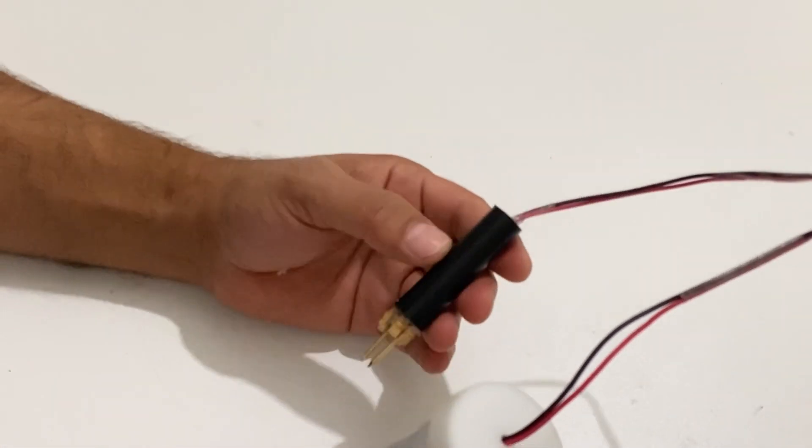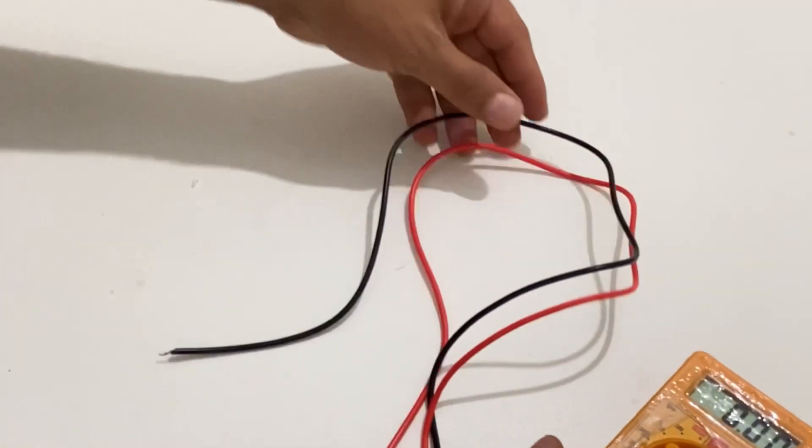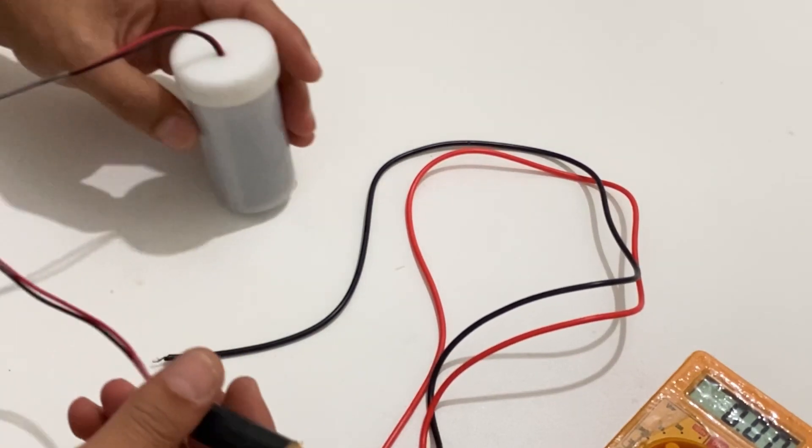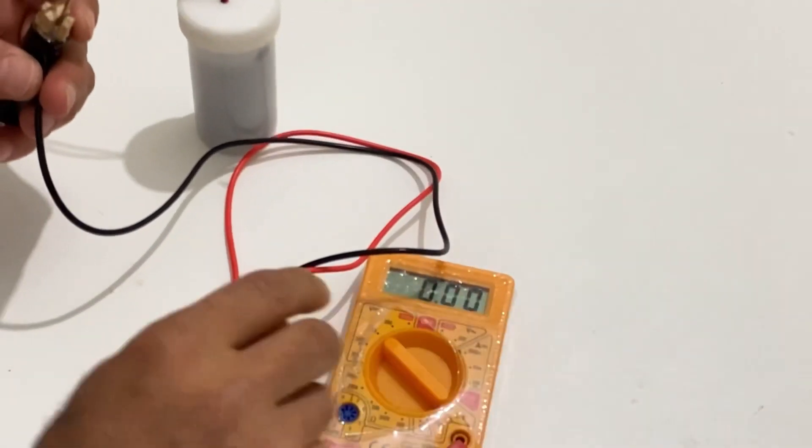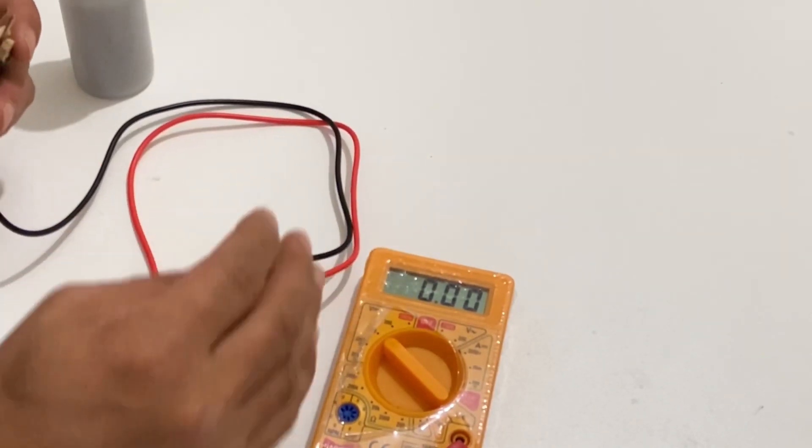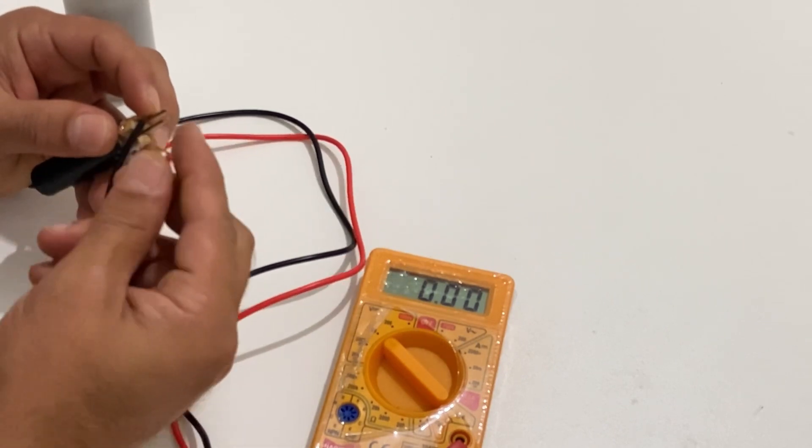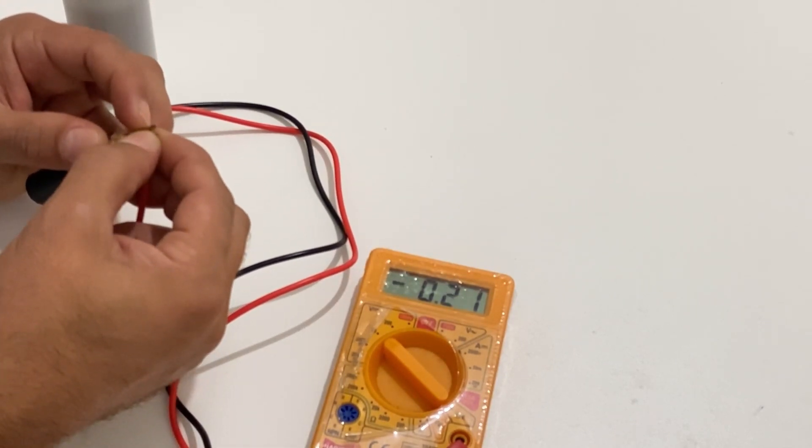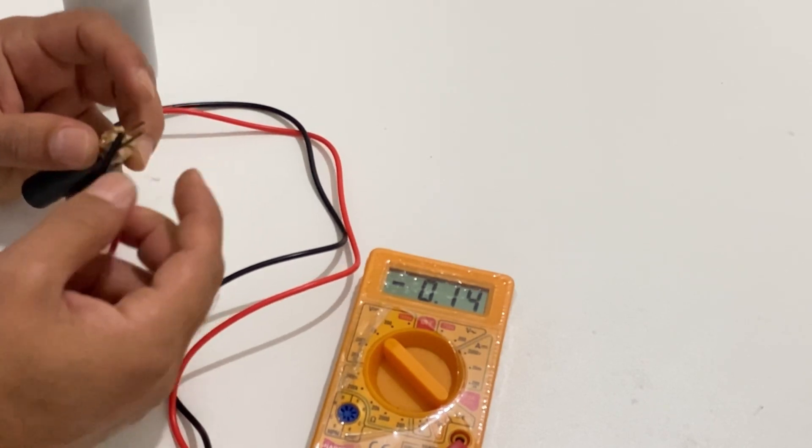Okay, I think we're done and it's time to test our welder machine. First of all, I want to show you how much voltage is in our welder machine, and then we will charge it. Yeah, it's about 0.15 volts and we need to charge it.